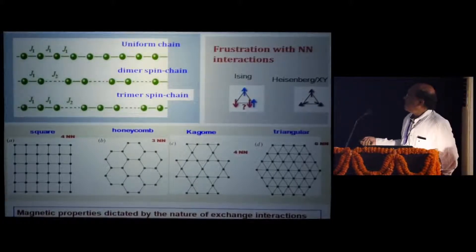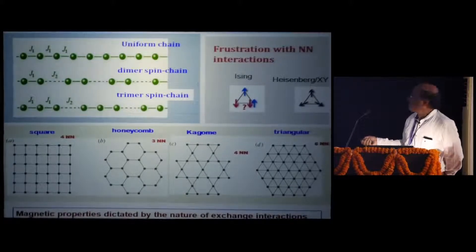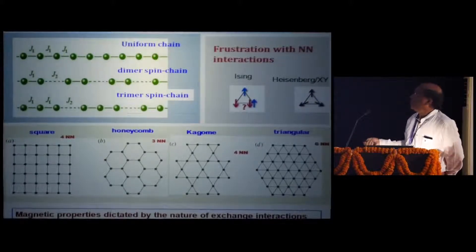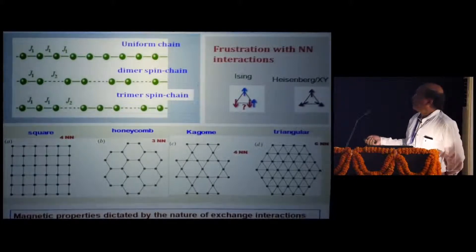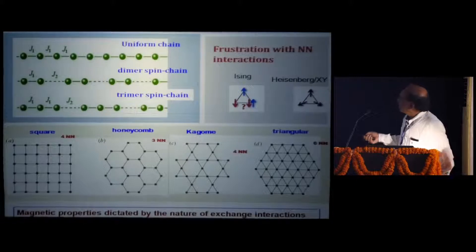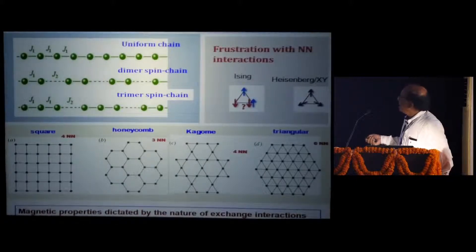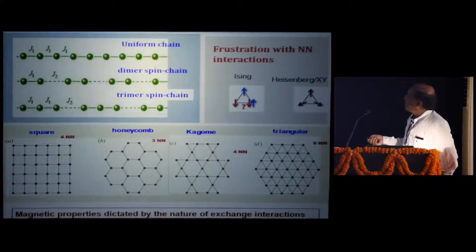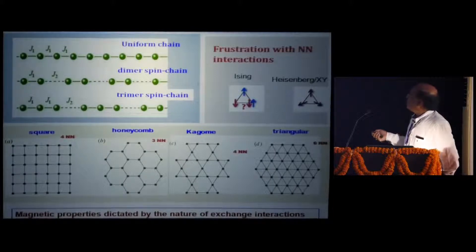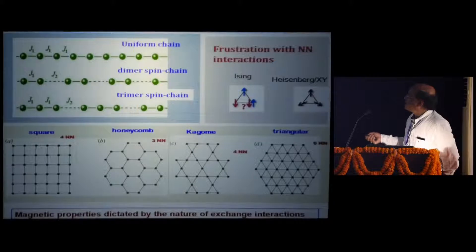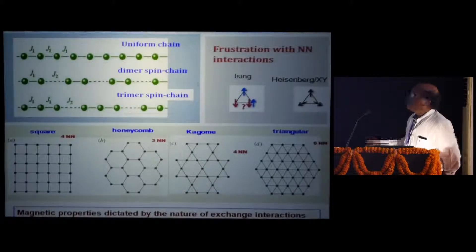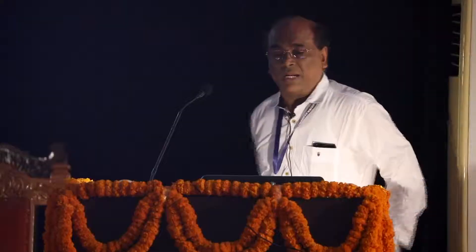Similarly for honeycomb lattice with nearest-neighbor interaction, there is no frustration, but if you include the next nearest-neighbor interaction, then the frustration can lead to different kinds of complex magnetic phases. But for kagome and triangular lattices, even with the first nearest-neighbor interaction, there are frustrations, and that leads to several complex magnetic phases and interesting phases.